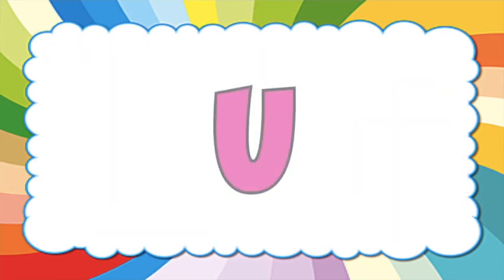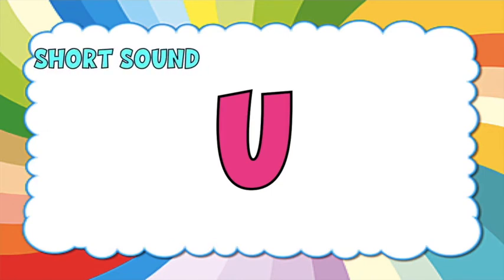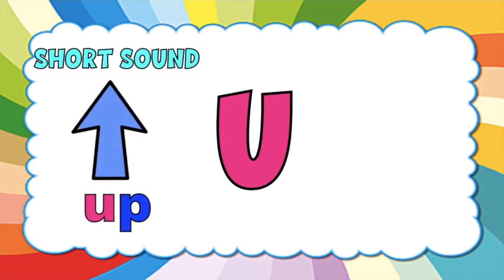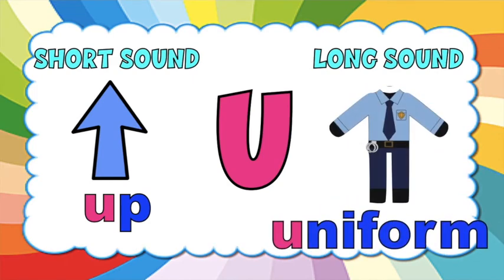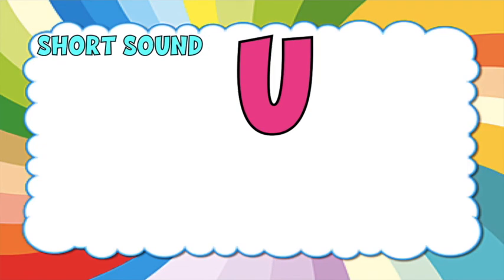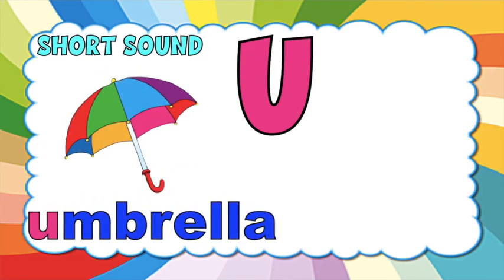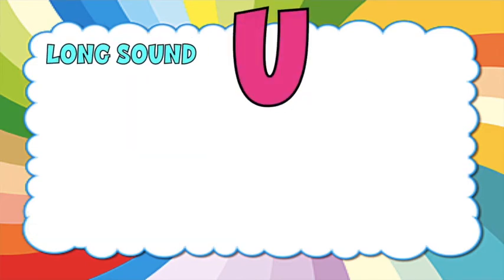Let's go now for U. The short sound for U is /u/, like up. While the long sound for U is U — uniform. Again, short sound: U — umbrella. U — urn. How about the long sound?